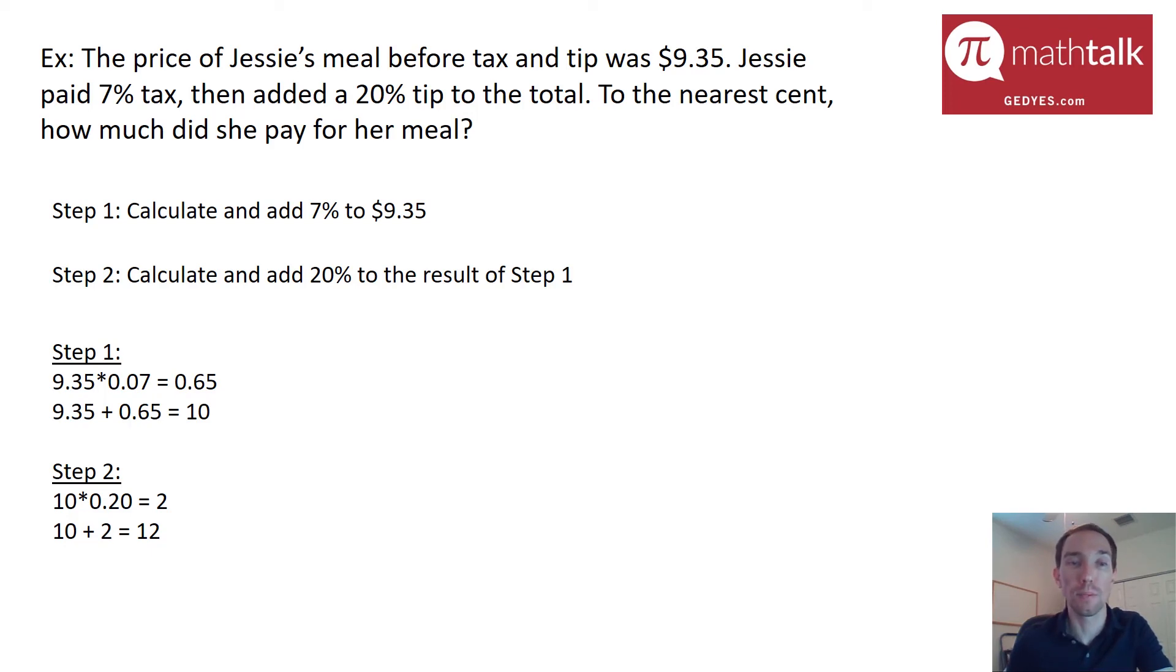So that means after the 7% tax and the 20% tip after that, the total amount that Jessie paid for her meal is $12.